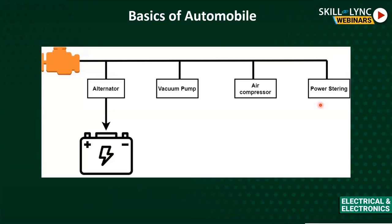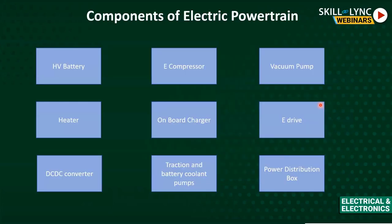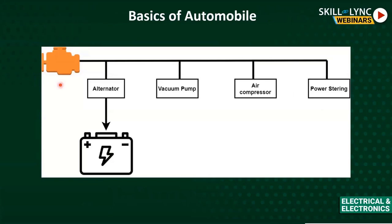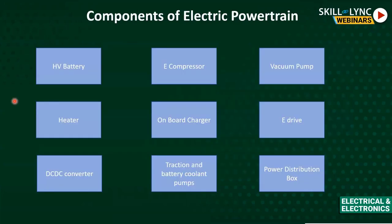Now let's compare the electric vehicle to the internal combustion vehicle. The main difference is that in an electric vehicle there is no internal combustion engine — traction is provided by electric motors. Let's look at the basic components of an electric powertrain.